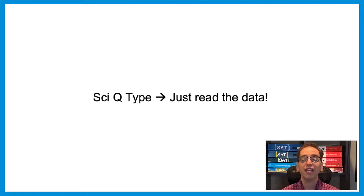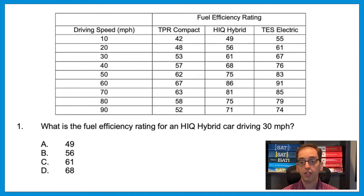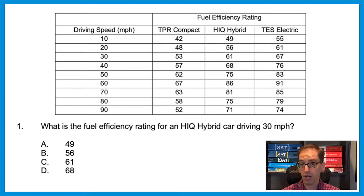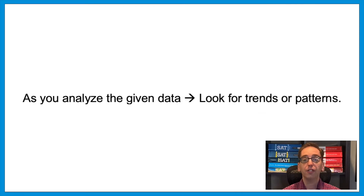As you read the data, you want to think about what story it's telling. Let's look at the numbers in this table more carefully. The column on the left indicates driving speed. What happens to each column of efficiency rating as the car goes faster? The numbers go up, and then somewhere around 60 miles per hour, they peak and then go down. The same trend is continued in each column. So as you analyze the given data, look for trends or patterns. If there is one, it'll be very clear, like we just saw here.